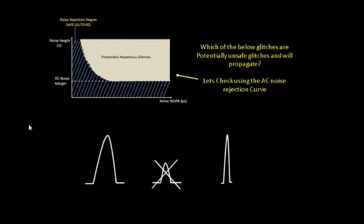Next, we'll put a cross over here and take a look at this glitch. When you take this glitch over here, the glitch height is definitely very high compared to the DC noise margin.